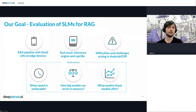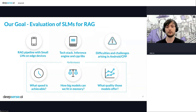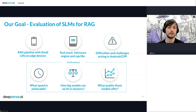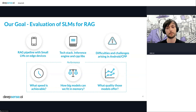Our goal was to implement a retrieval augmented generation pipeline utilizing a small language model on edge devices — on smartphones. Today we will go through the tech stack that we were using, how we stick things together. I will tell you about difficulties we encountered during that process, especially on the Android and C++ side. And performance-wise, the most interesting questions are: what speed can be achieved on these edge devices, how big a model can we fit into memory, and what is the quality of these small models?